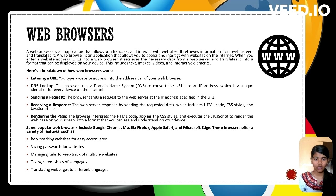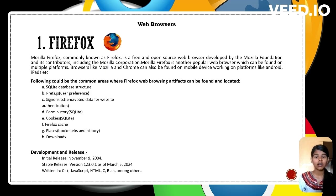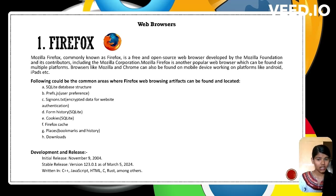Mozilla Firefox is a widely used, free and open-source web browser available on various platforms including mobile devices. Forensic artifacts in Firefox can be found in areas such as SQLite databases, user preferences, encrypted authentication data, form history, cookies, cache, bookmark history, and downloads. Firefox was initially released on November 9, 2004, with its stable release at version 123.0.1 as of March 5, 2024, and is written in multiple programming languages including C++, JavaScript, HTML, C, and Rust.